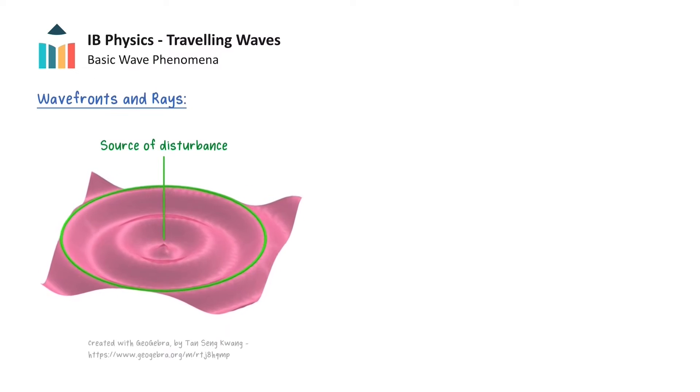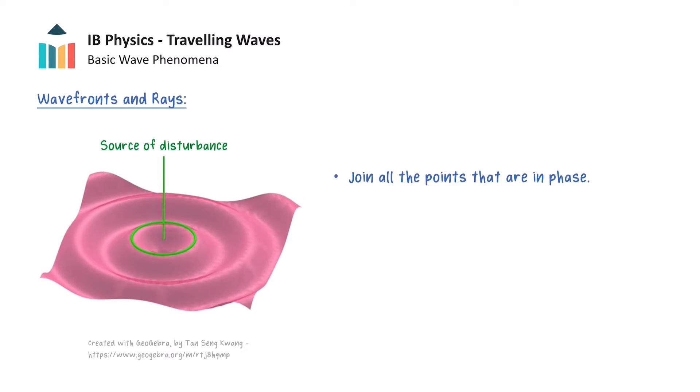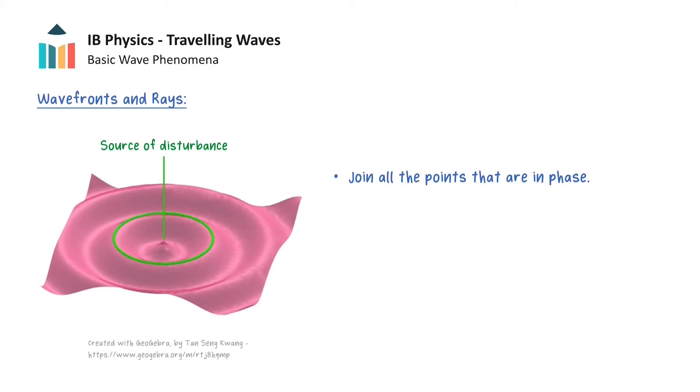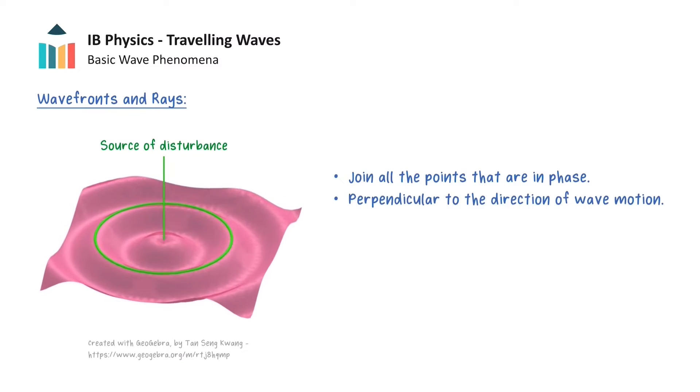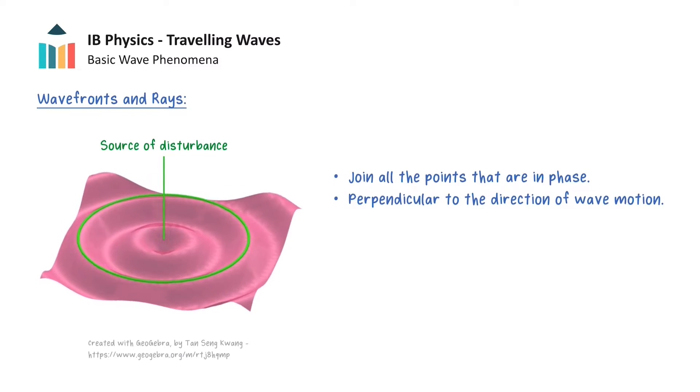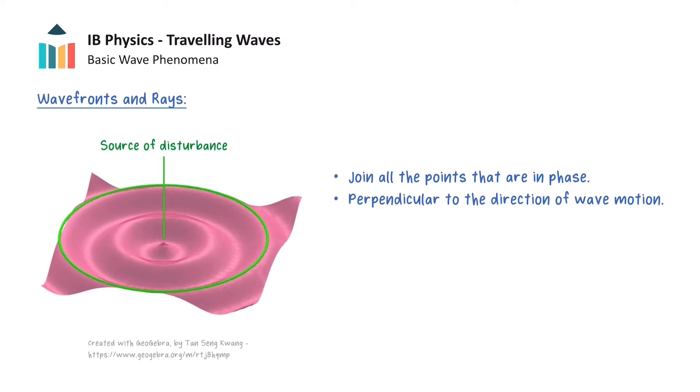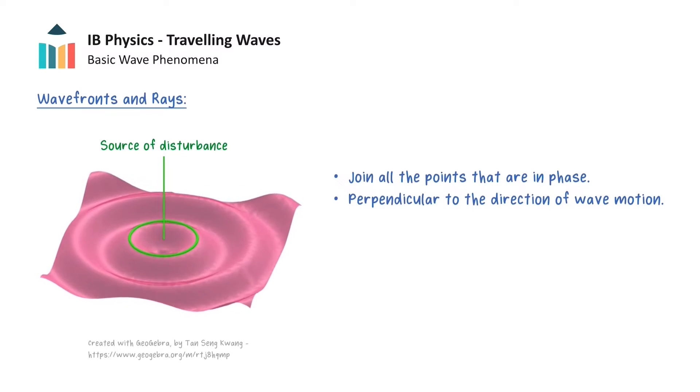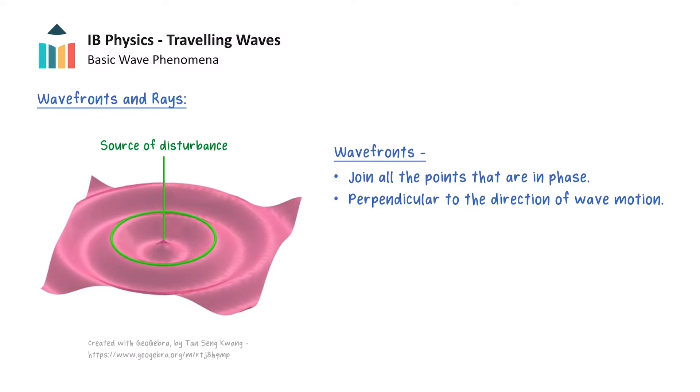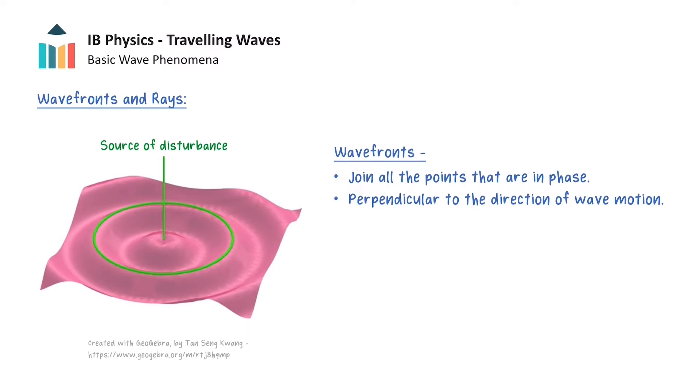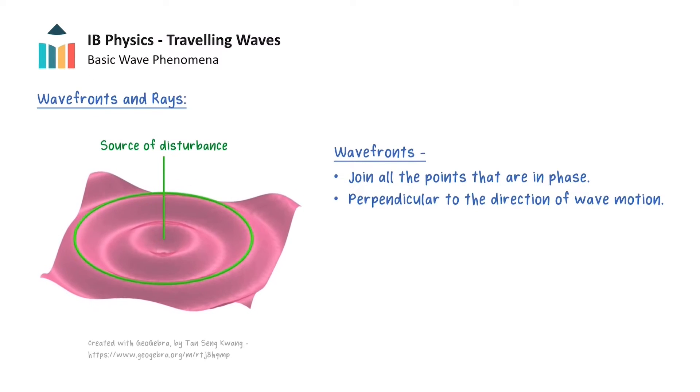Notice how the green circle joins the crests of the waves, hence the green circle shows the points on the wave that are in phase. Also notice how every point on the green circle is perpendicular to the direction in which the wave travels. These two properties in combination define a wavefront, so the green circle represents a wavefront of the wave.